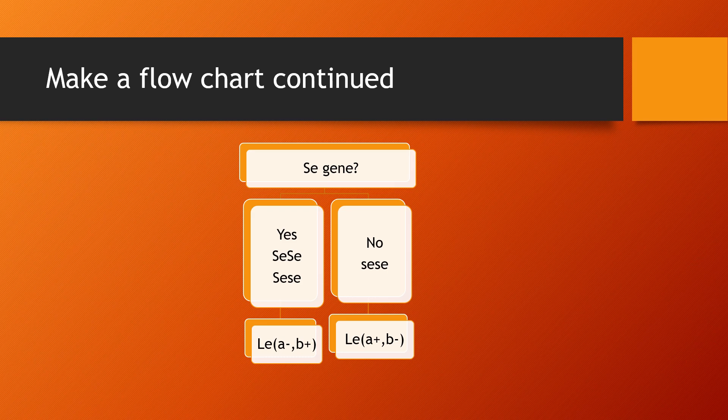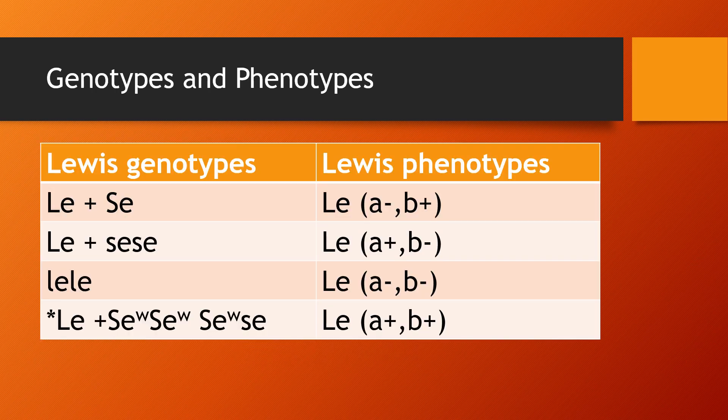The next question to ask is: does the person carry the capital SE gene? If yes — they are homozygous or heterozygous for the capital SE gene — they are Lewis A negative, B positive. If they are homozygous for the lowercase SE gene, then they are Lewis A positive, B negative. The chart shows you the genes with the phenotypes they create: capital LE and SE gives Lewis A negative B positive; capital LE with homozygous lowercase SE gives Lewis A positive B negative; and homozygous lowercase LE gives Lewis A negative B negative regardless of secretor status.